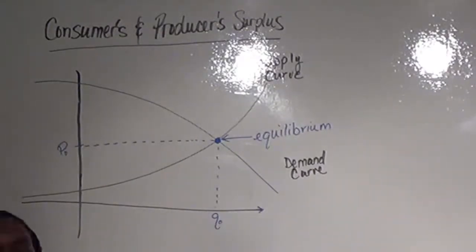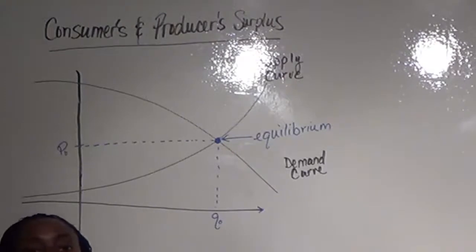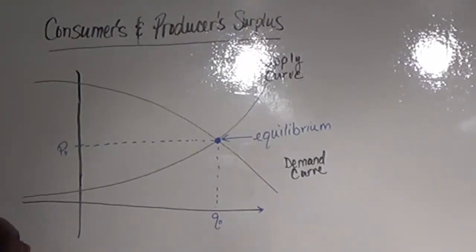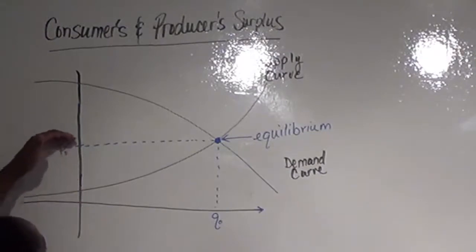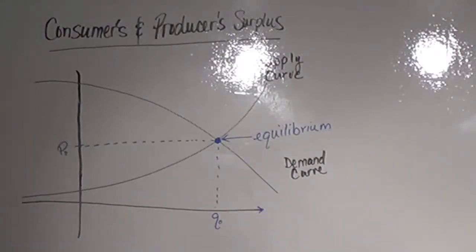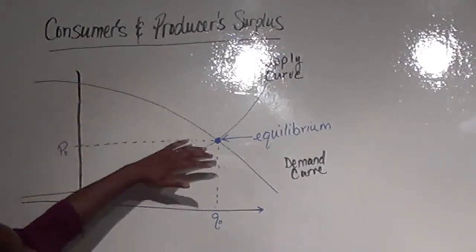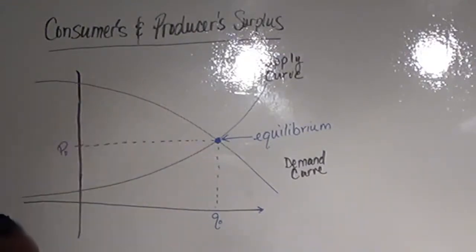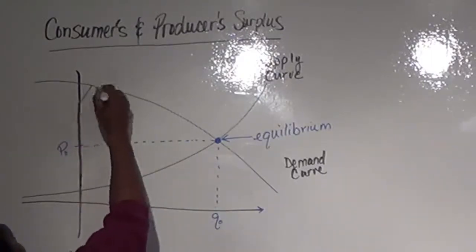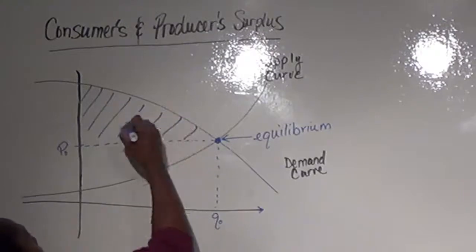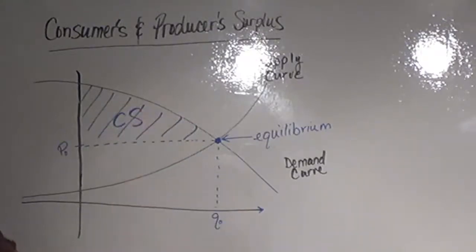Consumer surplus is basically what we consider a total gain to consumers who are willing to pay more than the equilibrium price. So if I'm looking at the equilibrium price here, the consumer surplus is the region under our demand curve that's above the equilibrium price. This region is what we would call our consumer surplus.